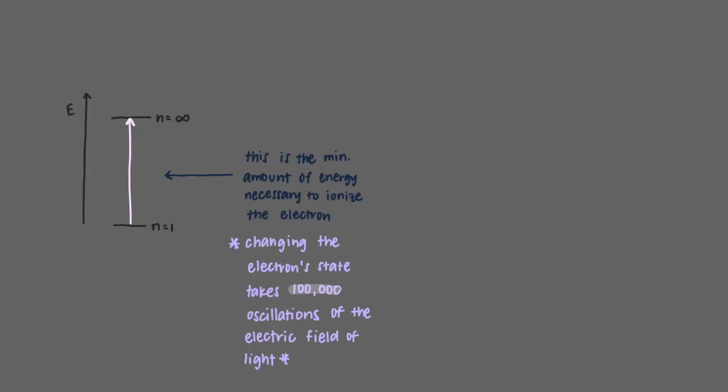The photon energy of this light is the minimum energy necessary to ionize the electron. The frequency of this light is called the threshold frequency, the minimum frequency of light that will cause ionization of the electron from the metal.